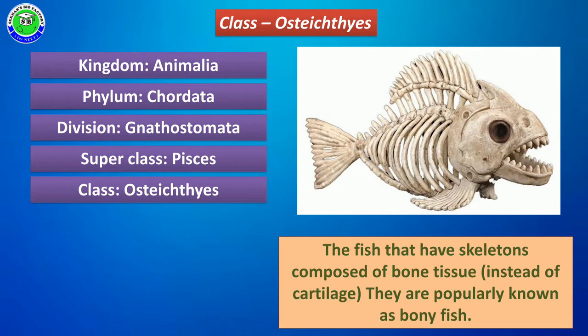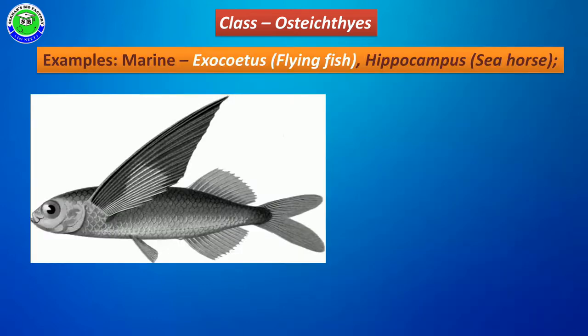In the name Osteichthyes, it refers to the fact that all these fishes have an endoskeleton made up of bone tissue. So instead of cartilaginous tissue, they have bone tissue. Due to having bone tissue in their endoskeleton, all Osteichthyes members are popularly known as bony fishes.